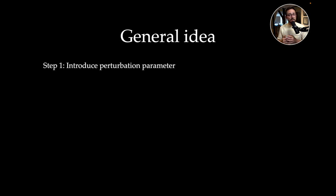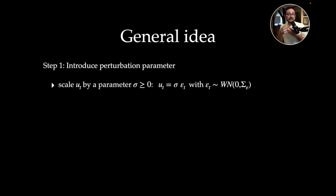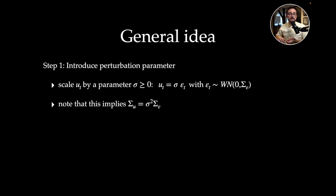Now, what is the perturbation approach? There are several steps. The first step is to introduce a perturbation parameter sigma that scales the stochastics in the model. We scale the exogenous variables by sigma, which is either 0 or some positive number. If sigma is large, there is huge uncertainty; if very small, just a little uncertainty; and if 0, there is no uncertainty. This enables us to distinguish between the static model (sigma = 0) and the dynamic model (sigma > 0).